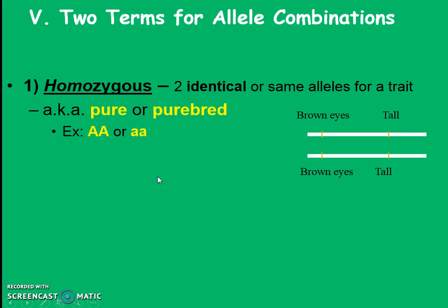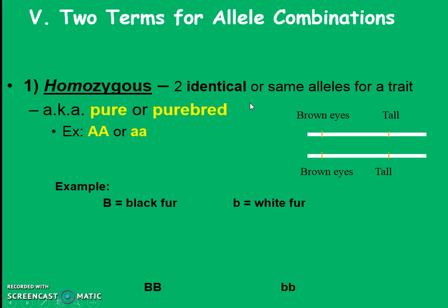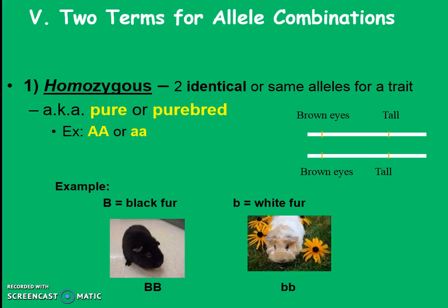Both homozygous types have the same letter in the same form — uppercase uppercase, or lowercase lowercase. If I had one uppercase and one lowercase, that's not called homozygous. Homozygous means same version. For our guinea pigs, I could have a black fur guinea pig — big B big B, because black fur was dominant — and for a white fur guinea pig I'd have little b little b. Those are homozygous.